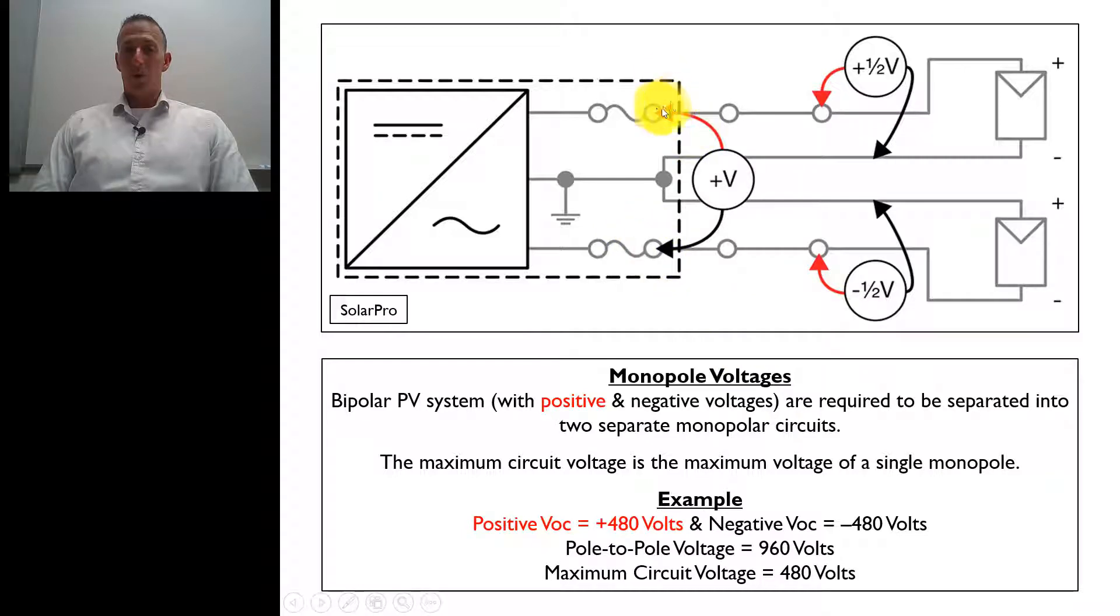We would have a negative 480 volts. If we measure pole to pole between the positive and negative, we would get 960 volts. So if we actually lost this center tap and we measured between here and here, we would actually have double what each of the monopole voltages are.